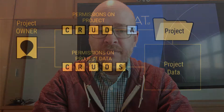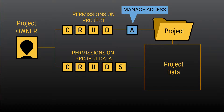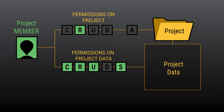There are three default permissions groups associated with projects, though other ones can be created to provide fine-grained access permissions. Project owners can perform all activities on all data in the project, including setting permissions for other users and modifying or deleting the project itself. Project members can create, read, update, and share data, but they cannot modify the project itself and they can't delete anything.